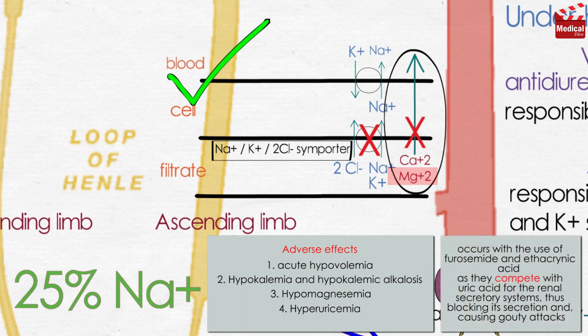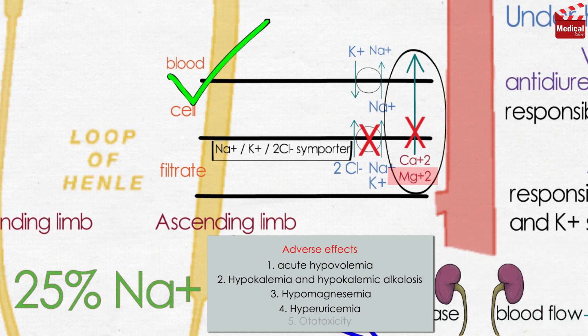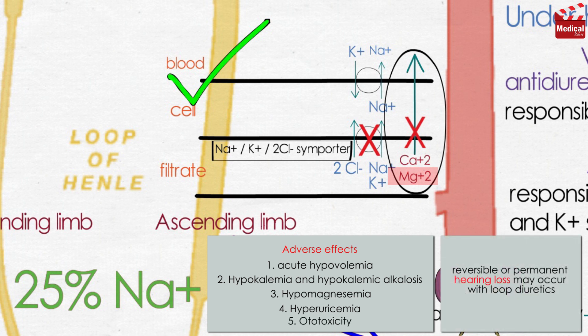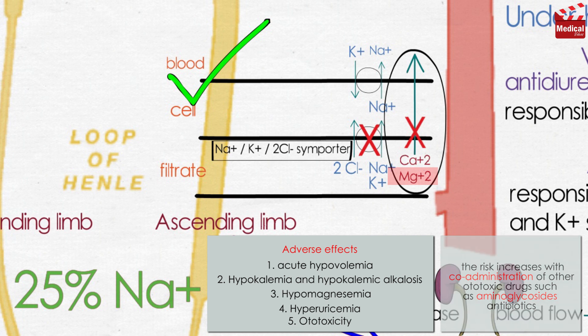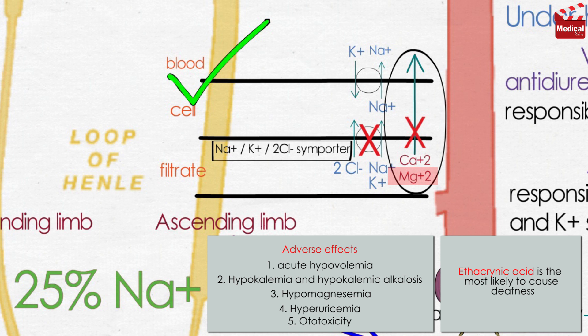Hyperuricemia occurs with the use of furosemide and ethacrynic acid, as they compete with uric acid for the renal secretory systems, thus blocking its secretion and causing gouty attacks. Ototoxicity — reversible or permanent hearing loss — may occur with loop diuretics, and the risk increases with co-administration of other ototoxic drugs such as aminoglycoside antibiotics. Ethacrynic acid is the most likely to cause deafness.